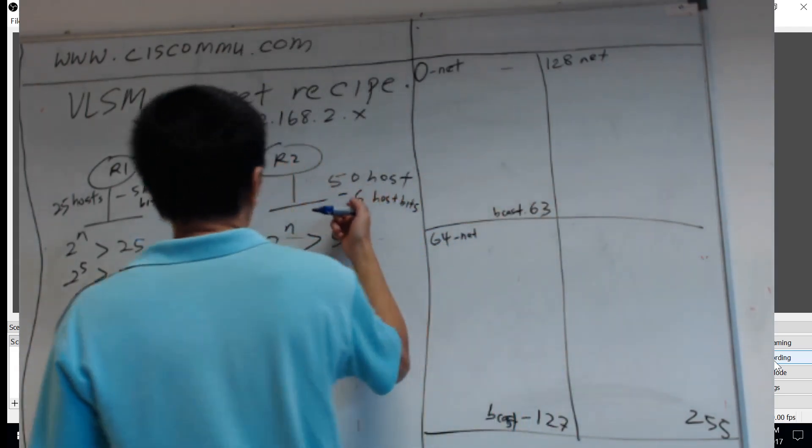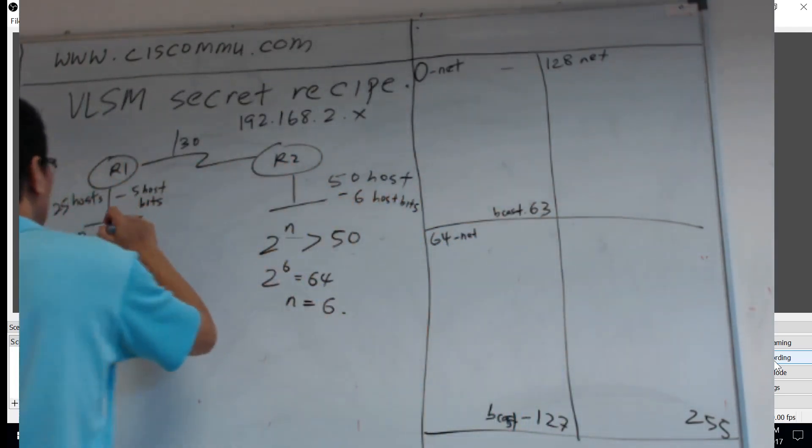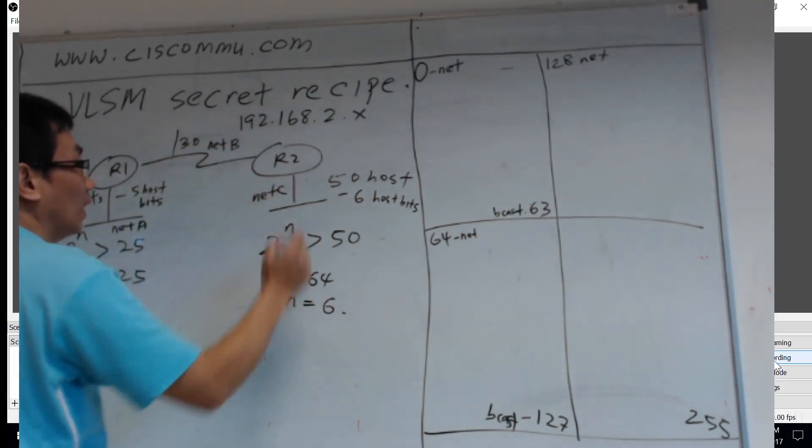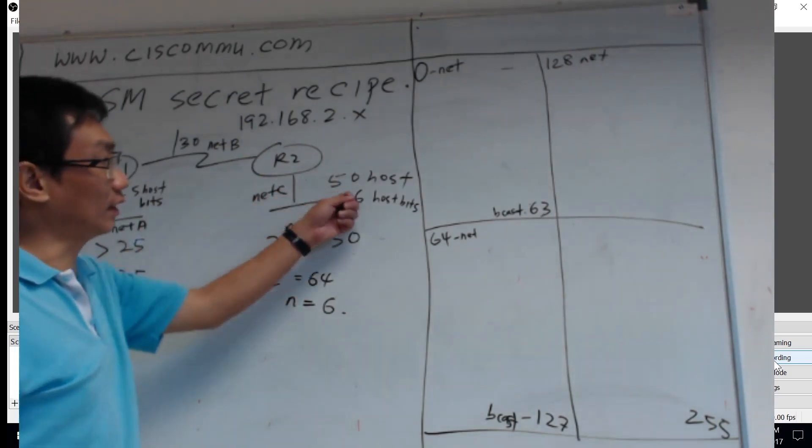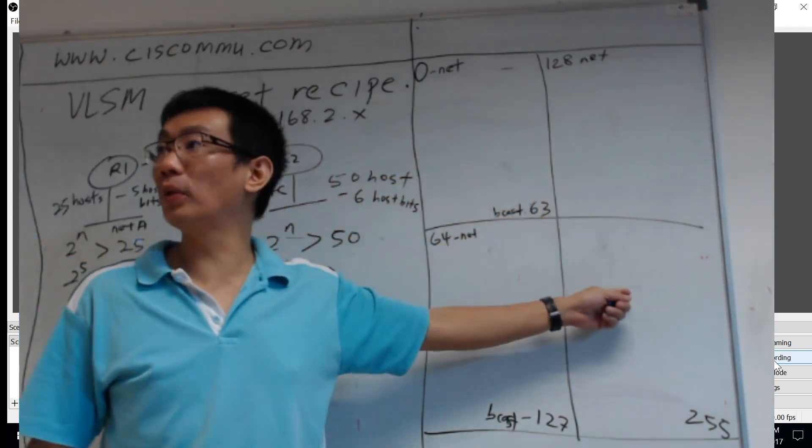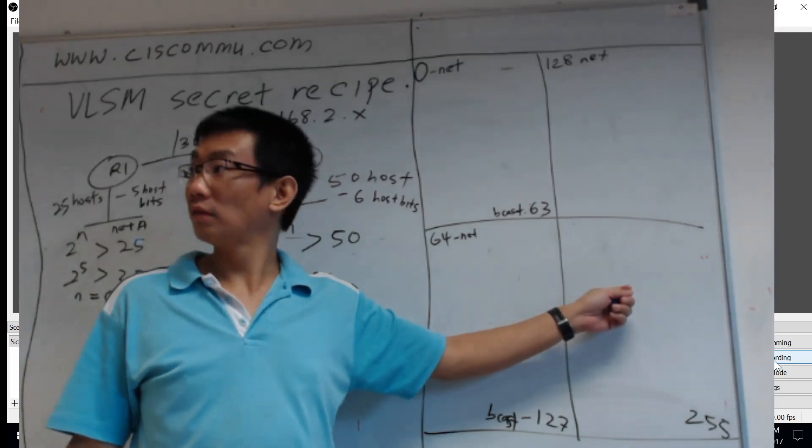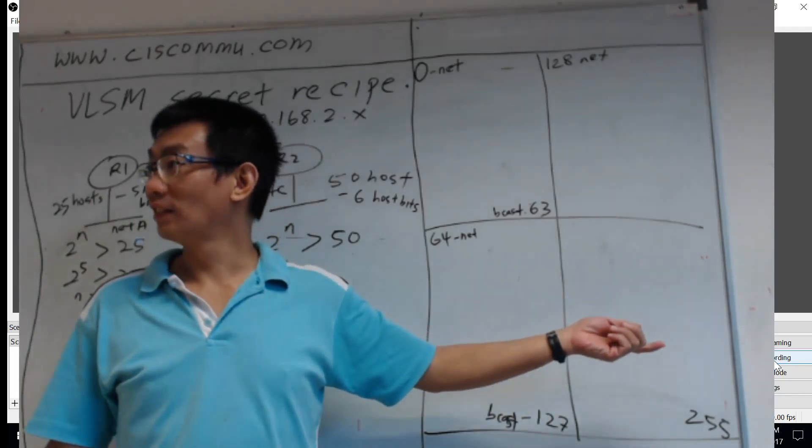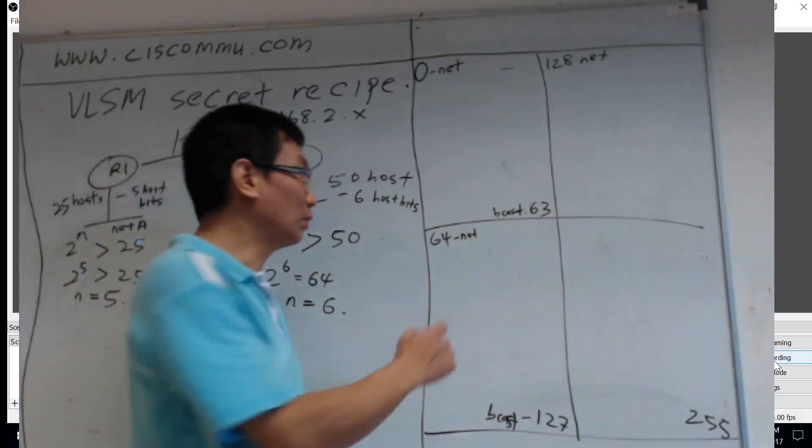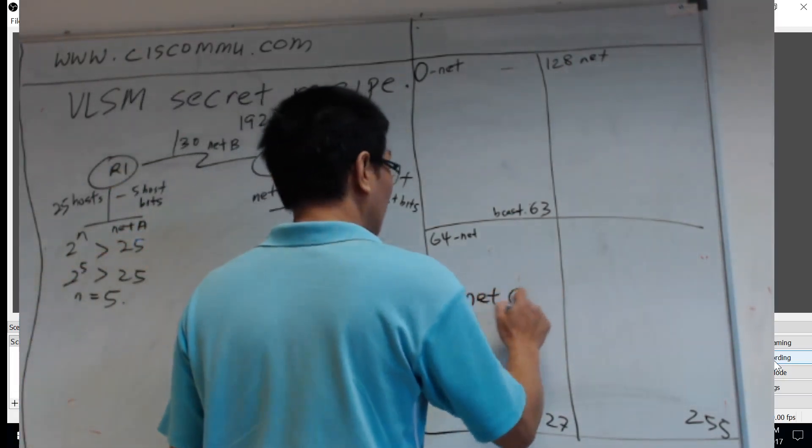So this network, let's put here Network A, Network B, Network C. So Network C, 6 bits, you've got 4 portions. Where do you want to put? Anywhere you like. Or put here, okay? So this one will be Network C.